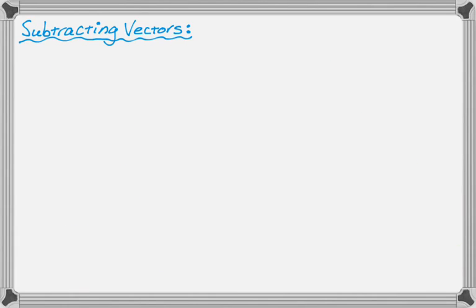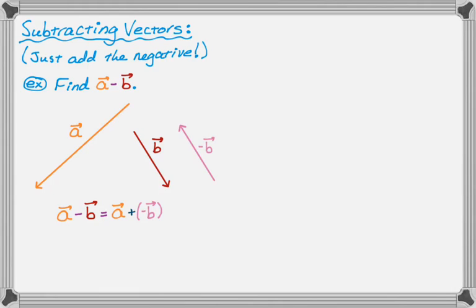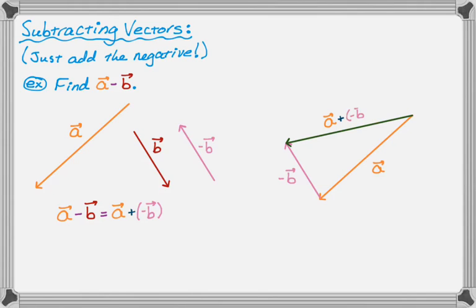To subtract vectors, you just add the negative. So if a problem says find a minus b, I change a minus b into a plus negative b. Negative b has exactly the same length as b but points in the opposite direction. To do the problem, I start with a, then from the terminal point of a I draw negative b. Then I go from the initial initial point — the initial point of a — to the terminal terminal point — the terminal point of negative b. That vector is a plus negative b, which is just a minus b. That's how you always subtract vectors.